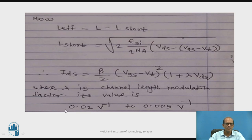Where lambda is the channel length modulation factor, and its value is given 1 by, its value is 0.02 V raised to minus 1 to 0.005 V raised to minus 1. This is the range of lambda.